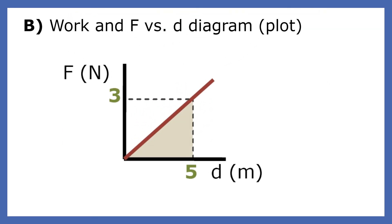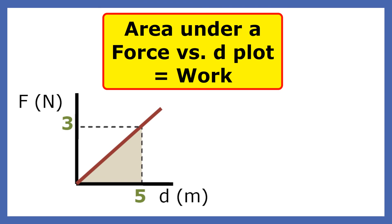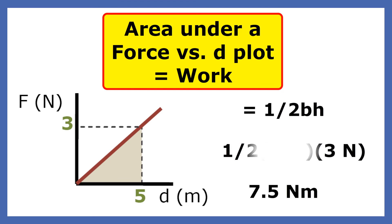This plot shows the work done on an object. The force starts out at zero and increases until it reaches 3 Newtons. What's the work done on this object? In order to find the work done, we find the area under the plot. Since the area under this plot is a triangle, we use ½ base times height to find the work.